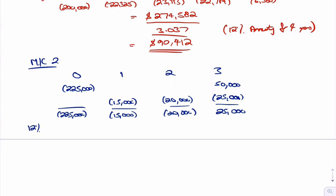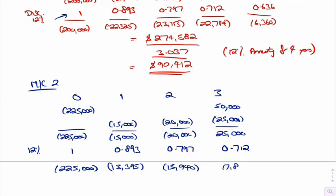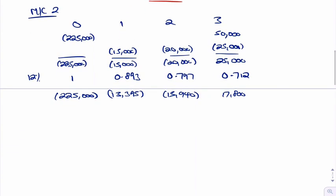Then we discount them down at 12% using the same discount rates as we had up there. So 1, 0.893, 0.797, 0.712. Then you multiply it all down. This one will give 225,000, this one would be 13,395 in brackets, that would be 15,940, and the final one would be 17,800 positive.